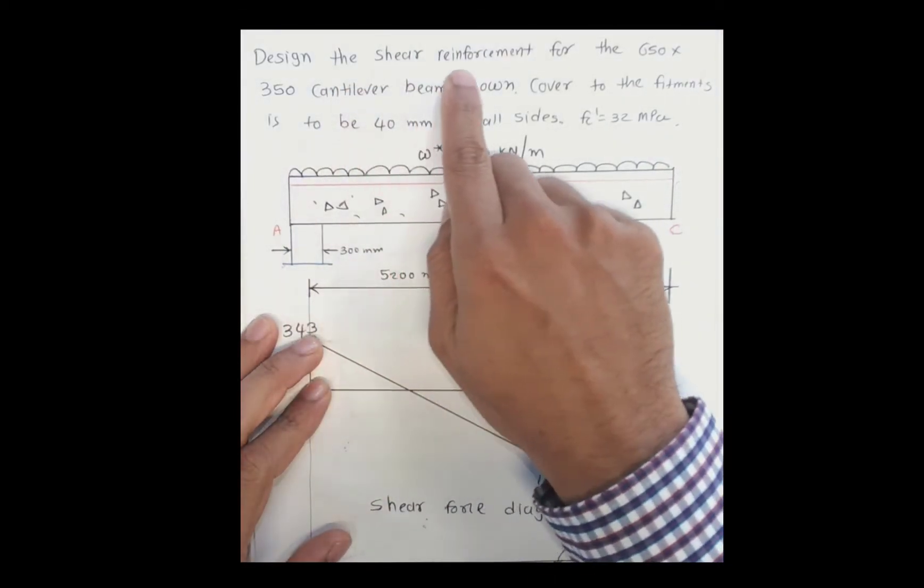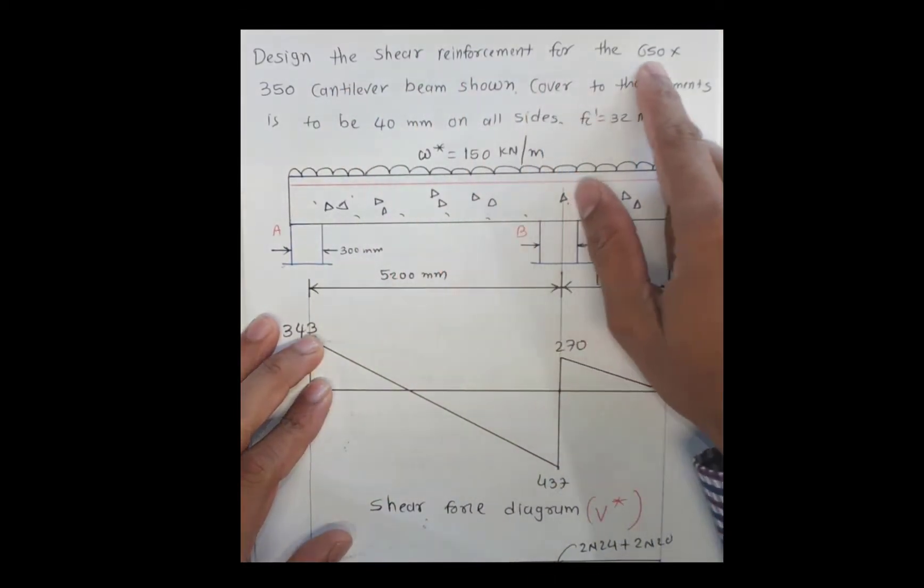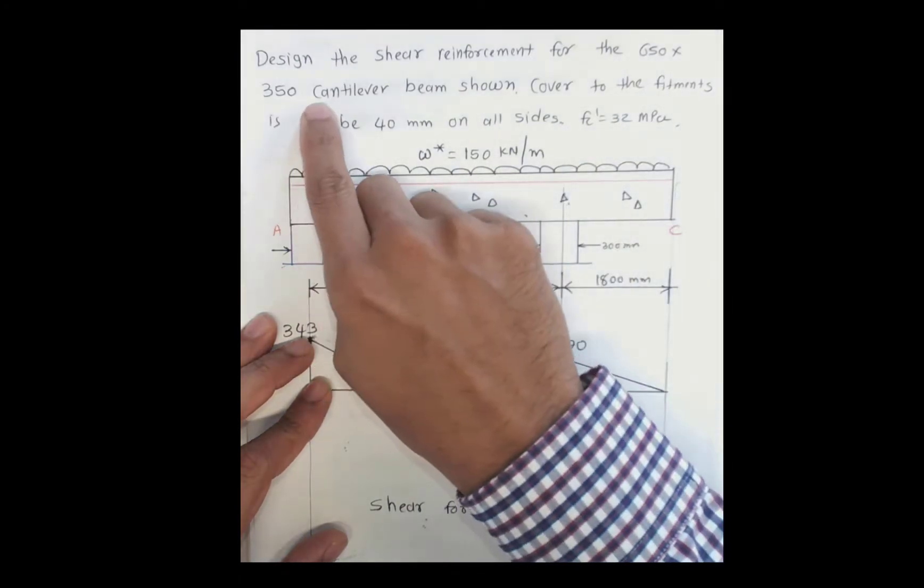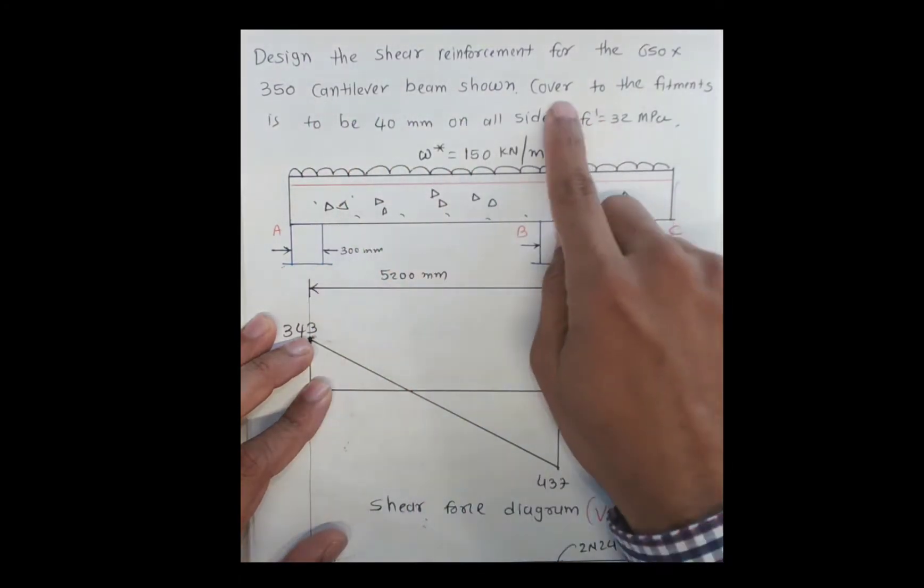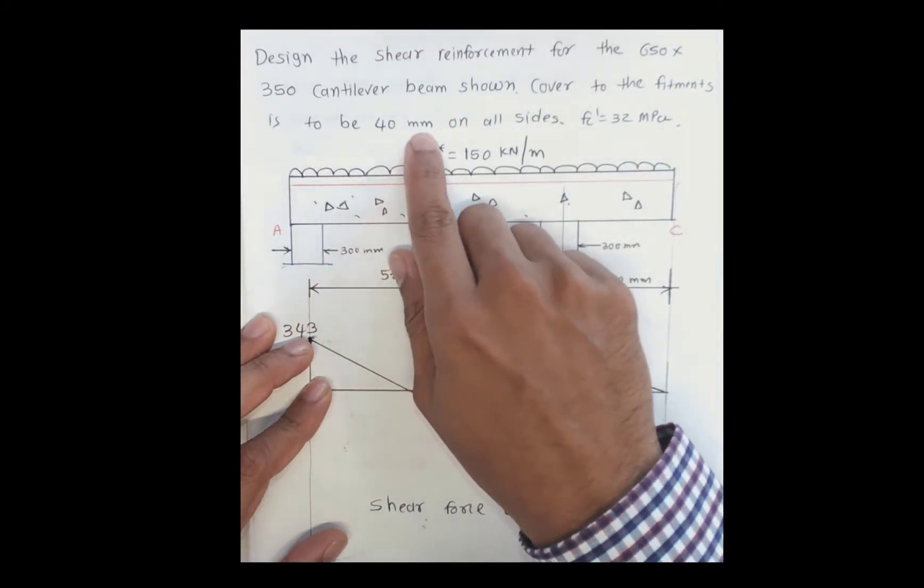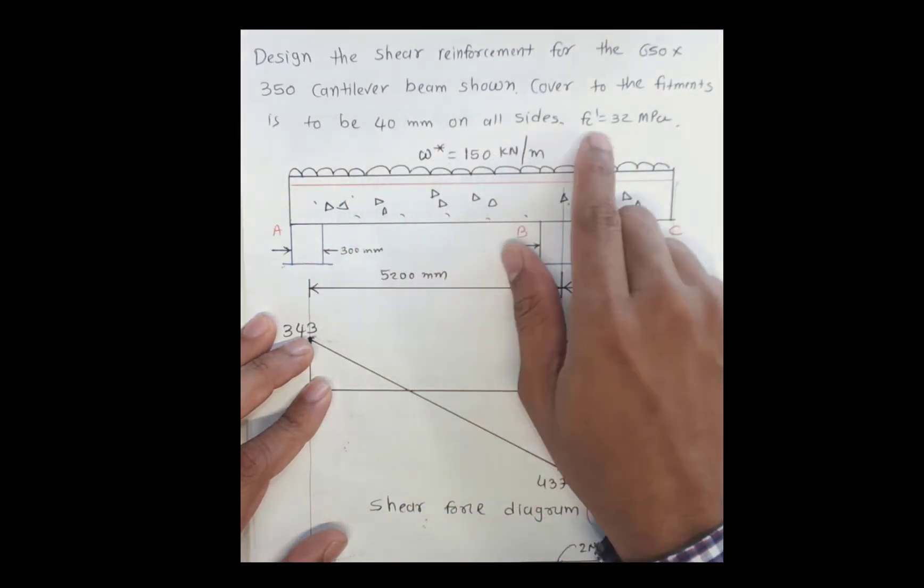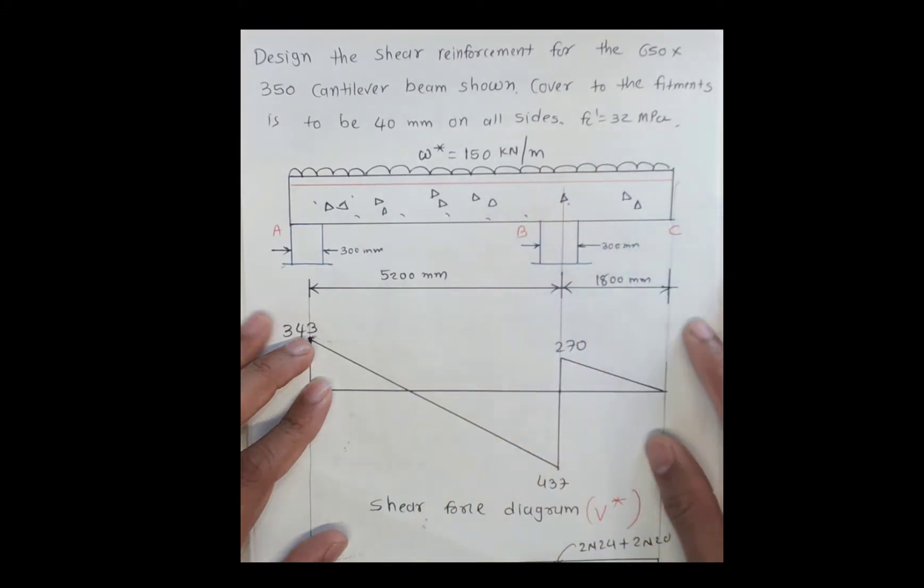This video explains the design of shear reinforcement for a 600mm x 350mm cantilever beam. Cover to the fitment is to be 40mm on all sides, and the characteristic compressive strength is 32 MPa.